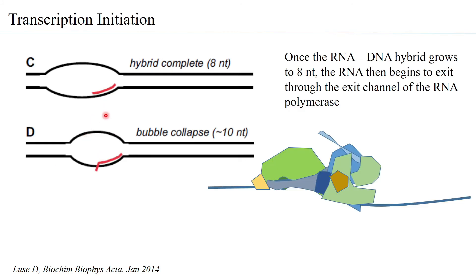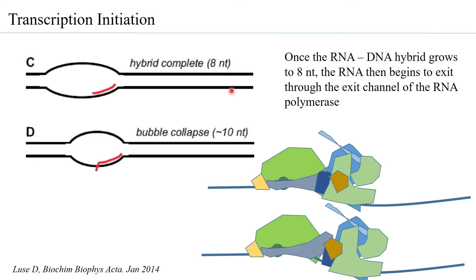When RNA polymerase synthesizes the RNA it has to move forward. When it was part of the open complex it was still very much part of the pre-initiation complex, but as it begins continuously synthesizing RNA, RNA polymerase 2 with TF2H and TF2F move a little further downstream.